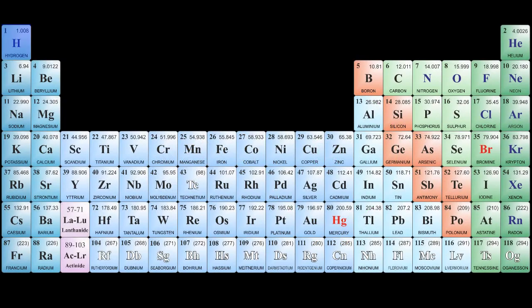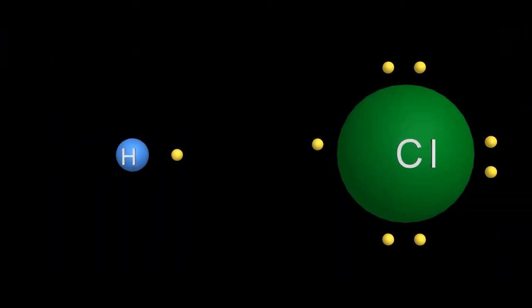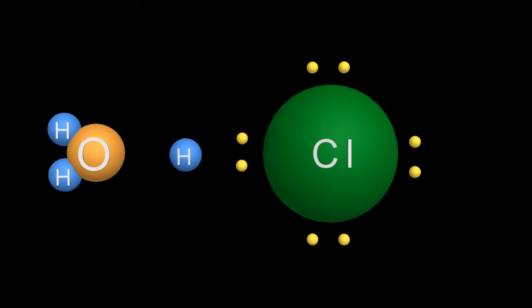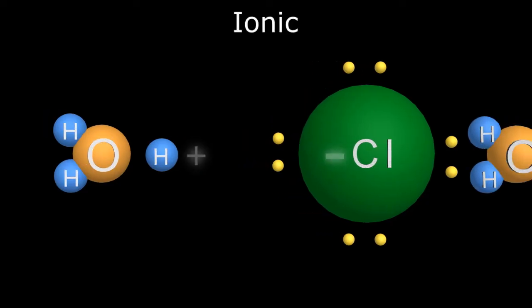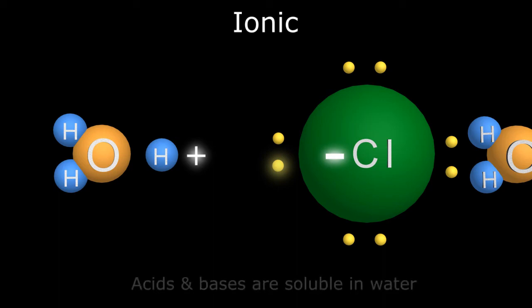Hydrochloric acid or HCl is polar covalent, with two atoms sharing their single electron in pure solution, but in the polar environment of water become ionic, with hydrogen donating its electron to chlorine. As such, acids and bases are soluble in water.